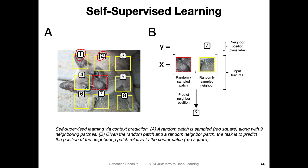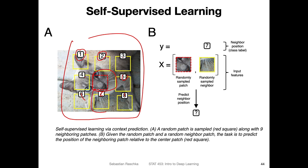You know the answer because you divided the image yourself — you can write a Python algorithm for that. You know all the labels, positions one through eight, and you withhold the ninth part. Then you present this extracted part to the deep learning system — the convolutional network — along with other image chunks, and have it predict what position it belongs to: position seven, position five, position three, and so forth. You know the answer because you were the one dividing the image, and you teach the machine to predict the right position.